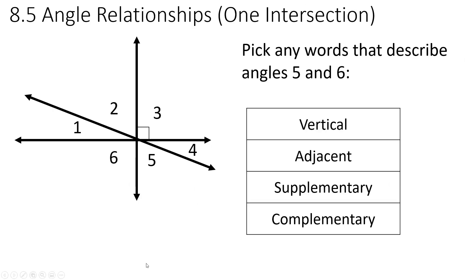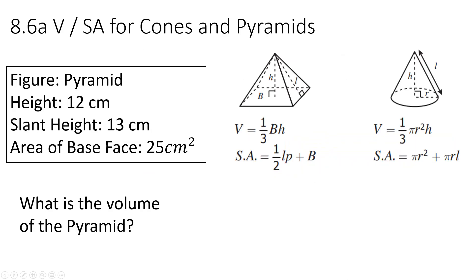Angle relationships at one intersection. Angles 5 and 6. The only thing you can really say is that they are adjacent. They share a ray. That's it. There's no other real relationships. They don't add up to 90. They don't add up to 180. So that's all you can really do.